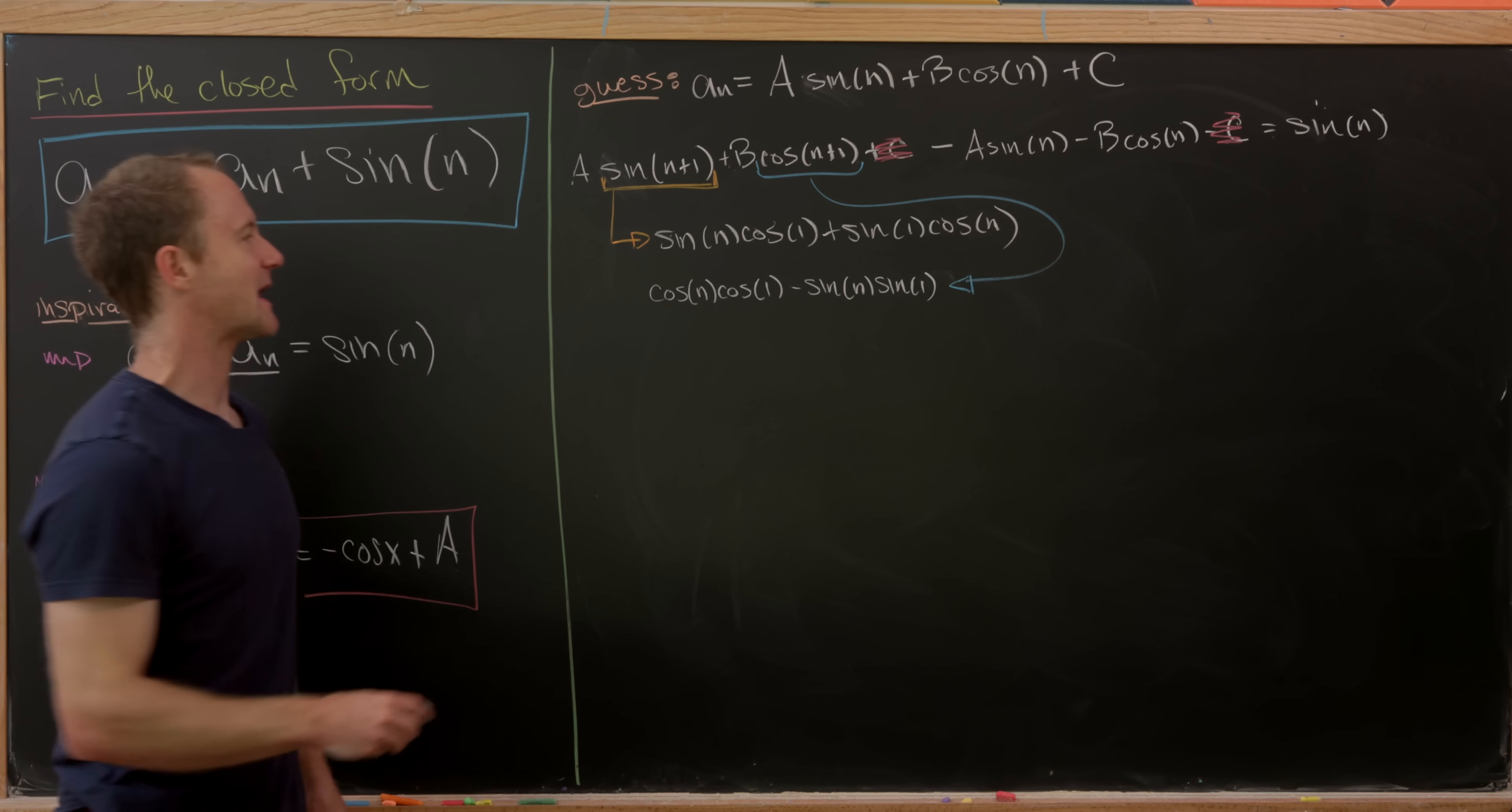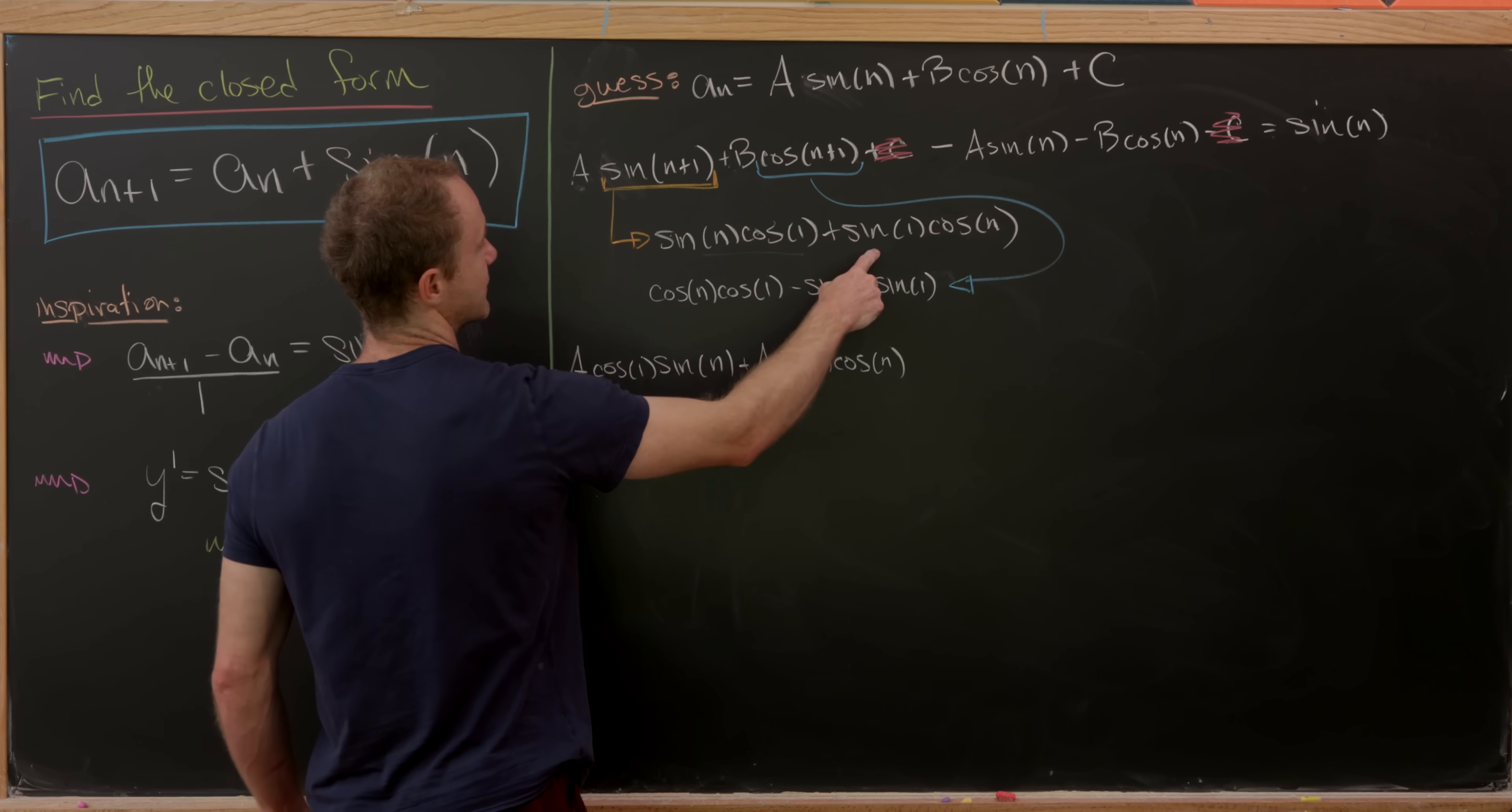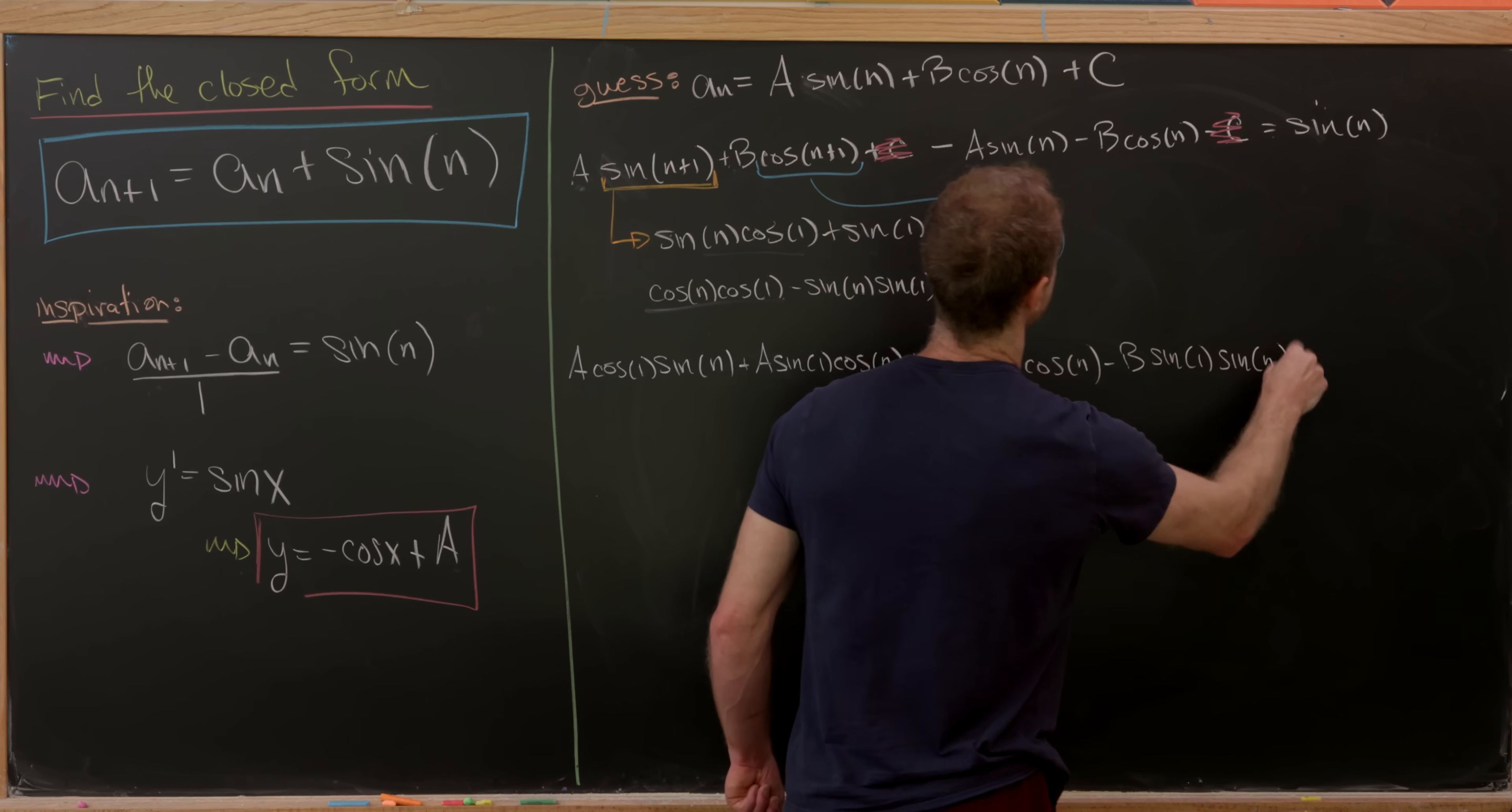And now let's expand this whole thing out. So we'll have a times cosine of 1 times sine of n, that's a multiplying through to this term, and then plus a times sine of 1 times cosine of n, a multiplying through to this term, and then we'll have plus b times cosine of 1 times cosine of n, that's b multiplying through to this minus b times sine of 1 times sine of n.